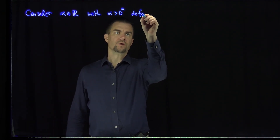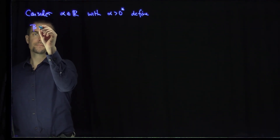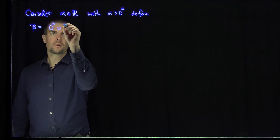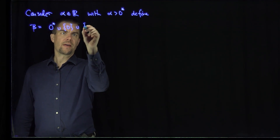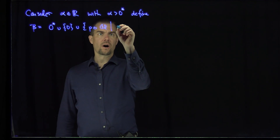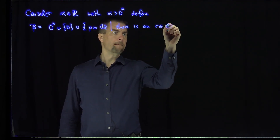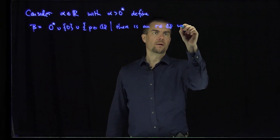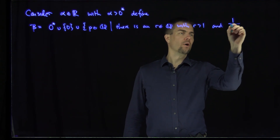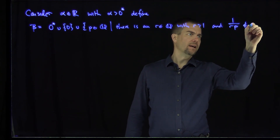I'm going to define a new cut — which I'll have to prove is a cut. Define a set beta to be the 0* cut, the number zero itself, and then the set of all p in ℚ such that there is an r in ℚ with r bigger than 1, and (1/r)·p not in alpha.